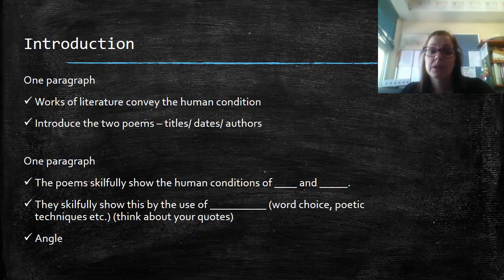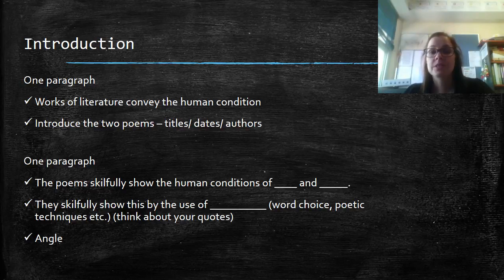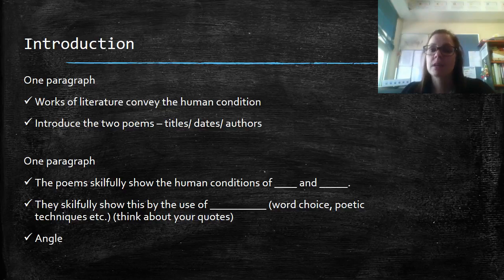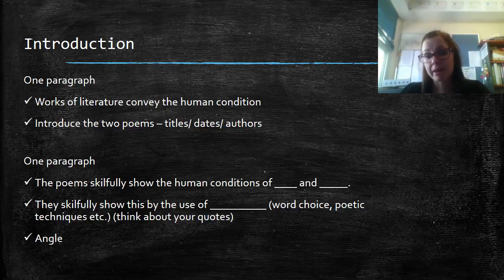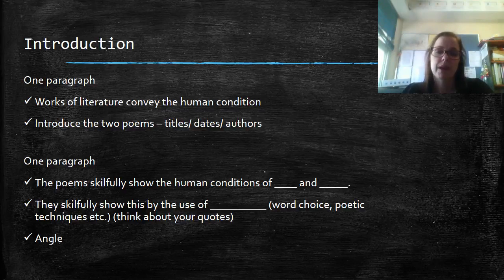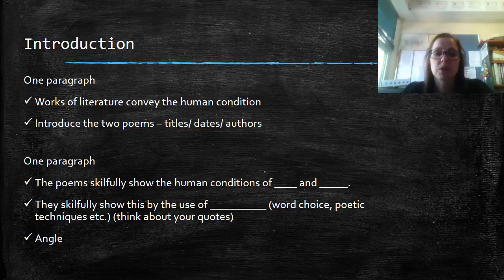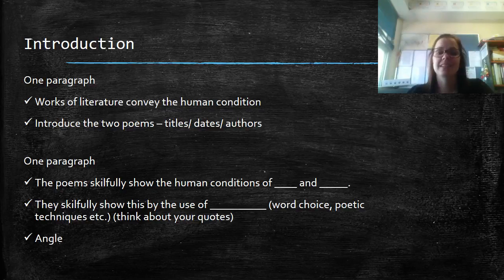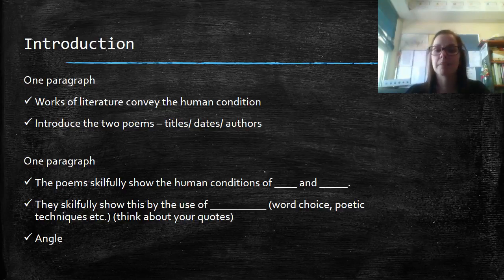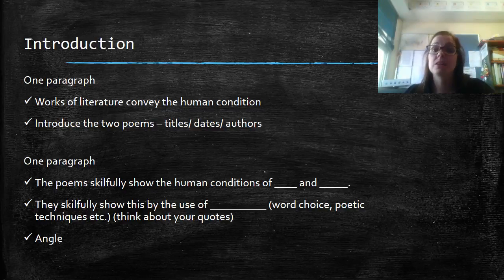Once you choose your option, we need to start working on drafting your feature article. Your scaffold is on the inside of your task sheet, but we're going to talk you through how to write a feature article here now as well. This is exactly the same as the example that we just went through. As we said with the feature article genre, we have lots of short paragraphs. You need to have an introduction. It's two paragraphs in this instance. The first one is on works of literature and how they convey the human condition and then we introduce the two poems, title dates and authors. The second paragraph elaborates on your human conditions and then how they are shown, looking at your evidence and then your angle.